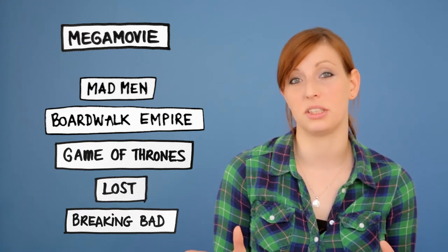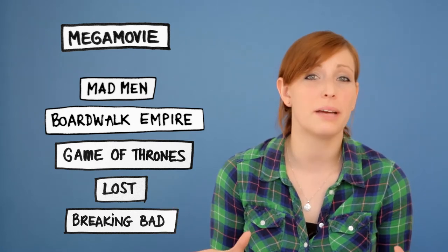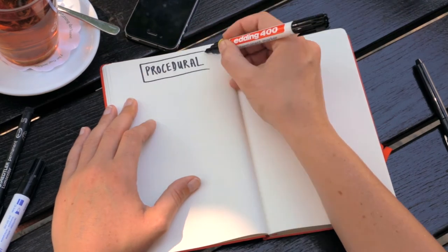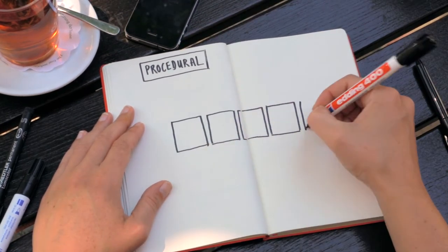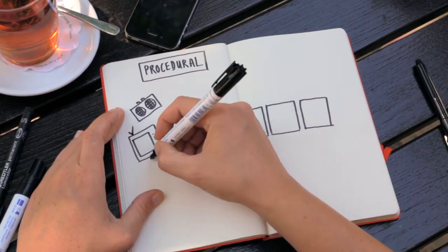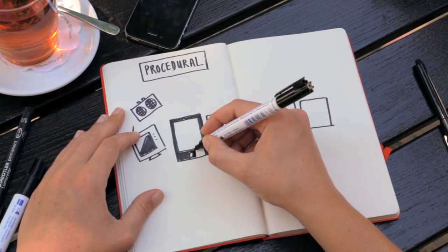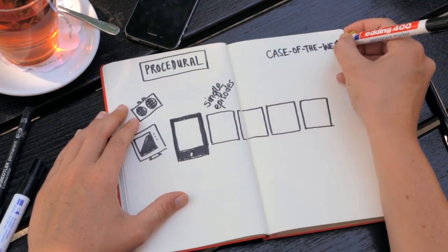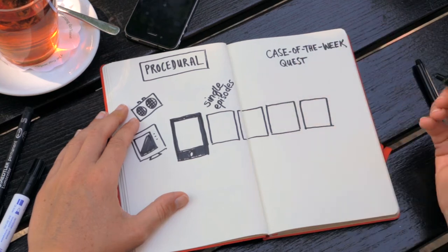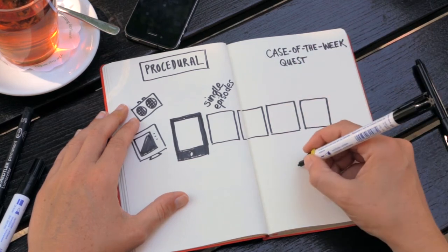A second classic series type with one hour episodes is the procedural. A procedural is in its core a series of standalone episodes that is premised on a so-called case of the week, a form of quest that has to be solved every week.